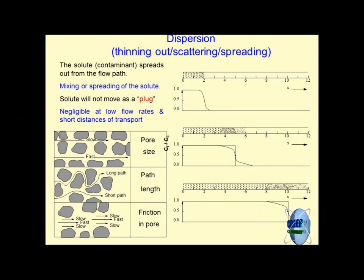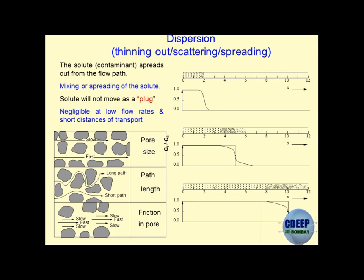In the dispersion process, again consider the same plug from the previous lecture - the concentration of the contaminant spreads over. As time increases and distance increases, the concentration is thinning out, dropping down, and moving along the X direction. This process is known as the dispersion process.